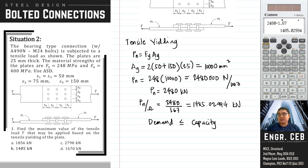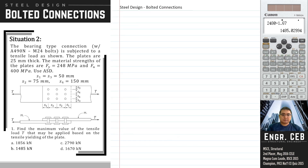To obtain a safe design, the demand should be less than the capacity. We have already solved for the capacity, which is 1485.03 kN. Based on the figure, the demand on one plate is T. Therefore, T should be less than 1485 kN so that the plate will not fail in tensile yielding. This is already the answer, and the answer is letter B.